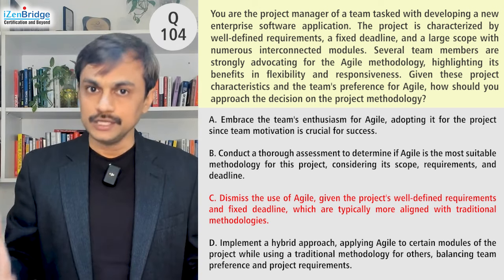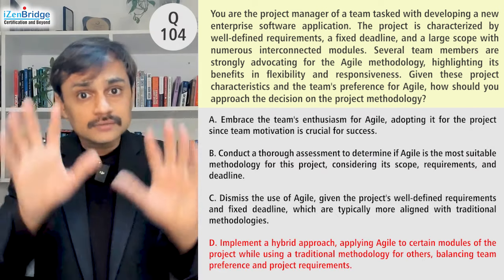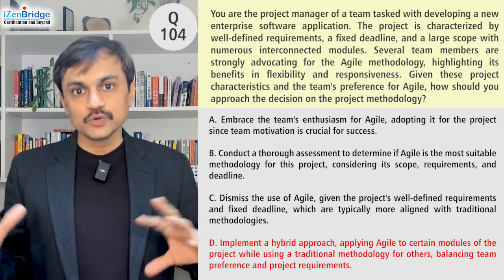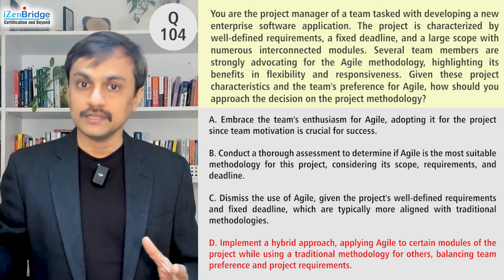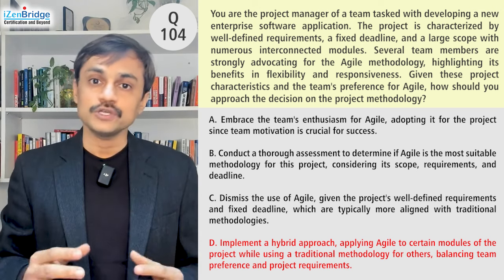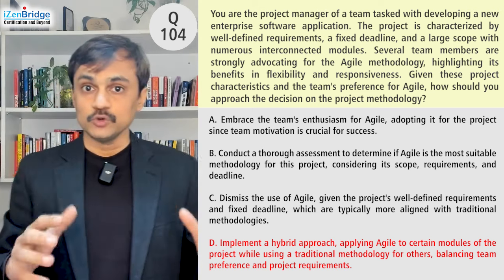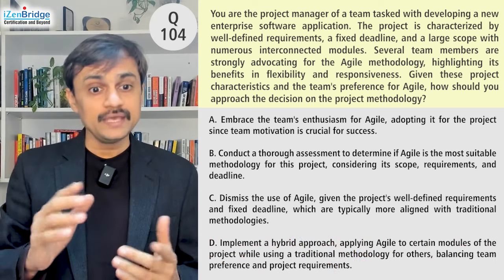Option D: Implement a hybrid approach, applying Agile to certain modules while using a traditional methodology for others, balancing team preference and project requirements. This could be the final conclusion — most likely you will go with a hybrid approach, since the project shows some characteristics that benefit from incremental working, while others point to predictive working. However, the issue is that Option D is a direct recommendation, assuming this is how it will work. So B and D are very close.